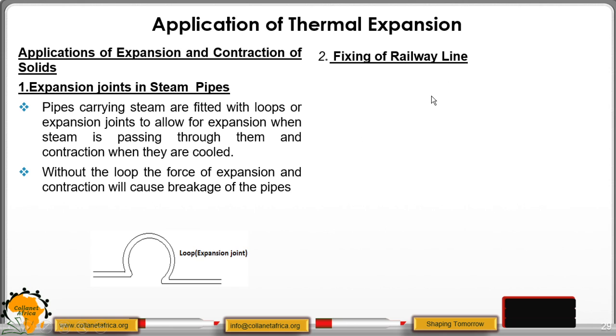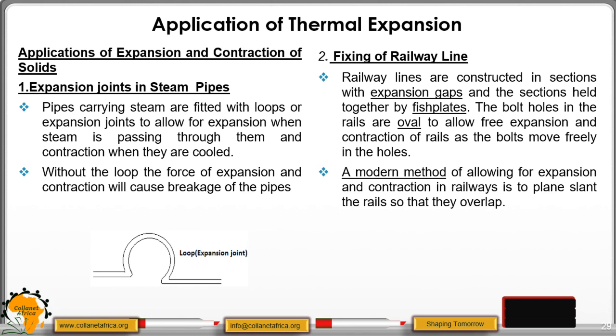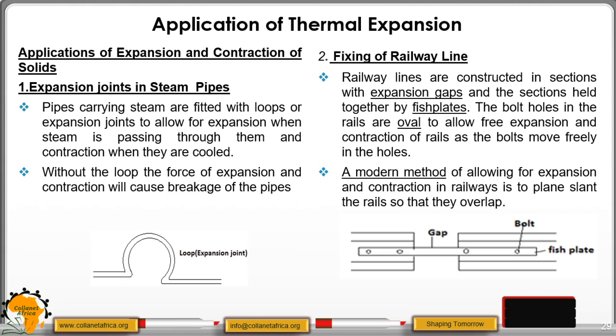Then we have the fixing of railway lines. When railway lines are being constructed, there are expansion gaps that are left. These sections are held together by what we call fish plates, and the bolt holes in these layers are oval. They are oval so that they can give us free expansion and contraction as the bolt moves freely in the holes. In modern methods, a way of allowing expansion is that these layers are slanting or they overlap, and that gap that is left will allow for expansion.